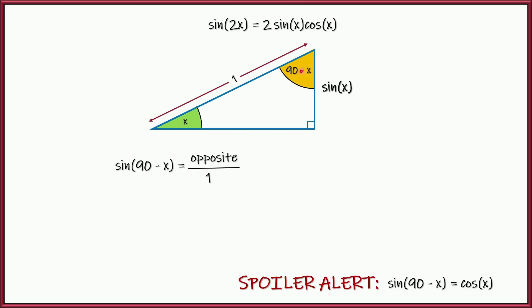The sine of this angle right here is opposite over 1. Right? All right. So then the opposite of that angle is the sine of 90 minus x. So if this side is sine of x, then this side right here is the sine of 90 minus x.